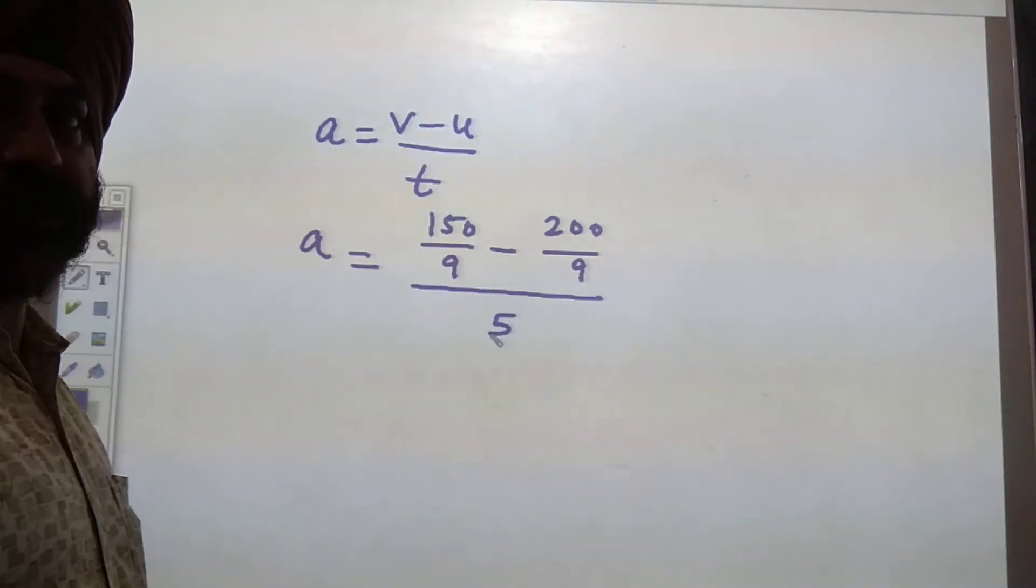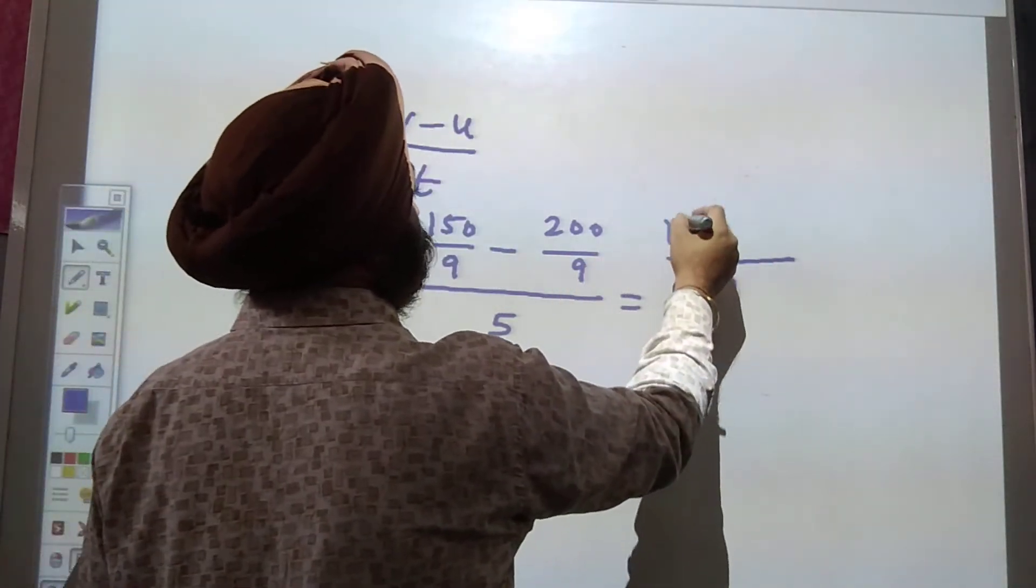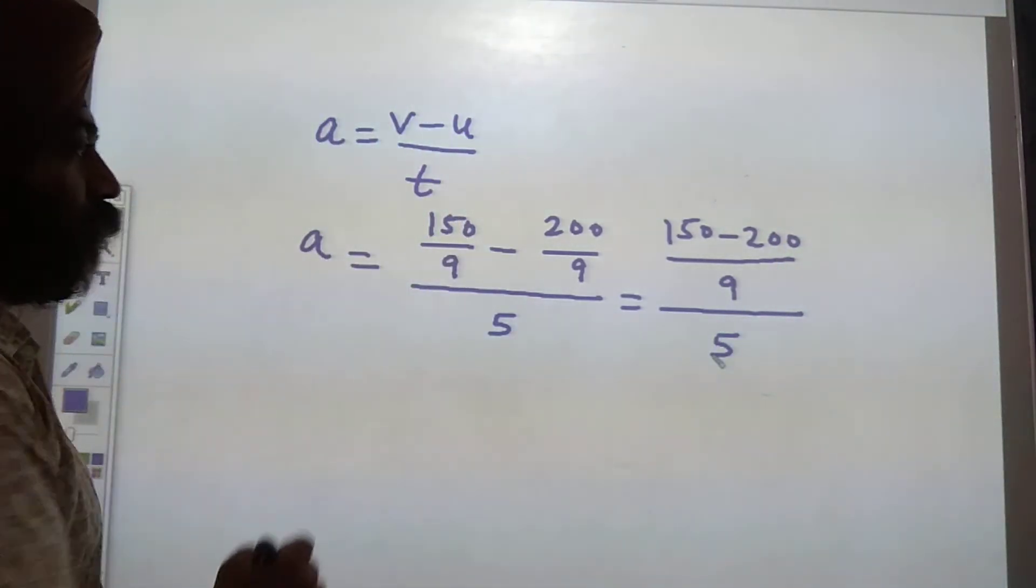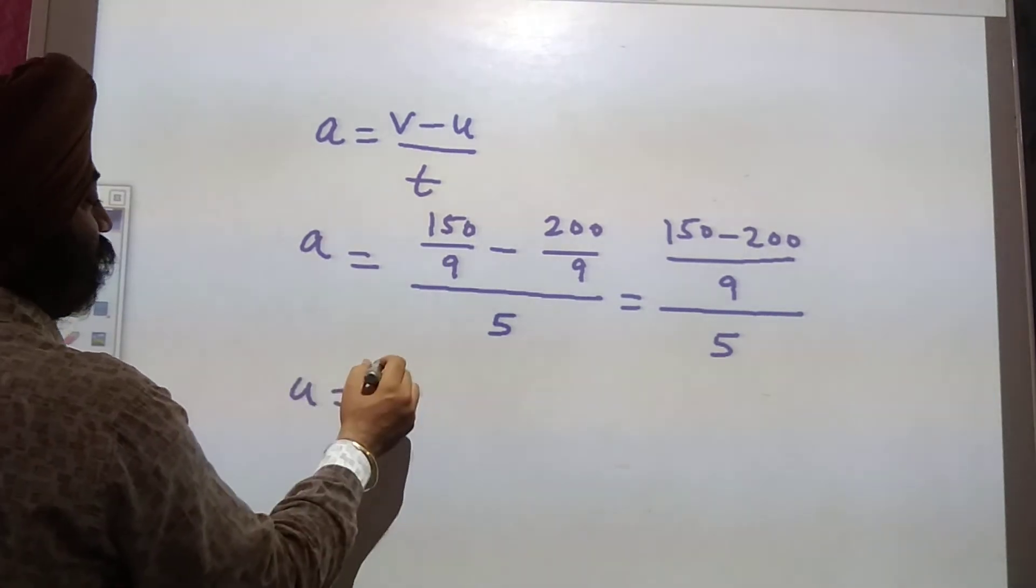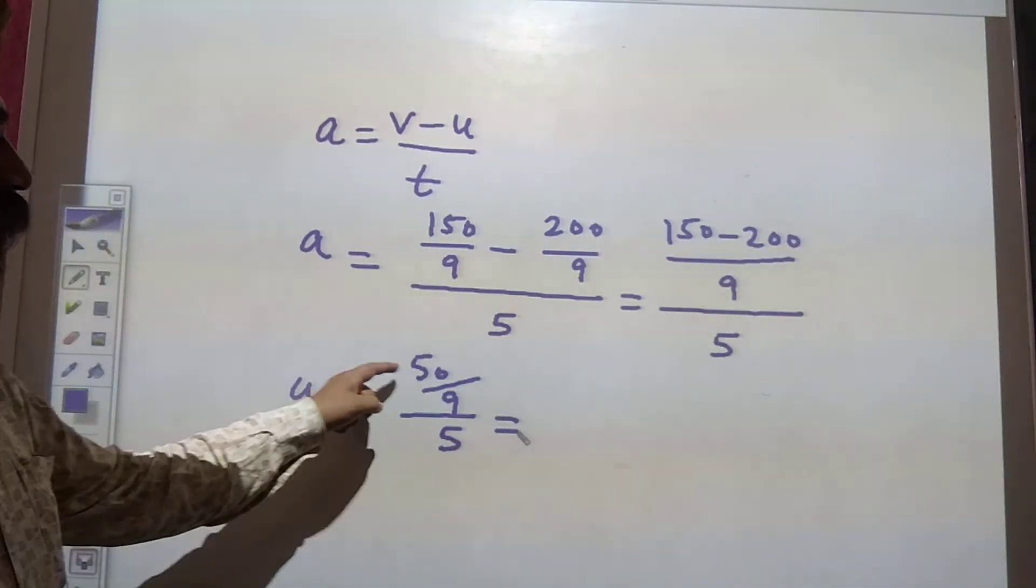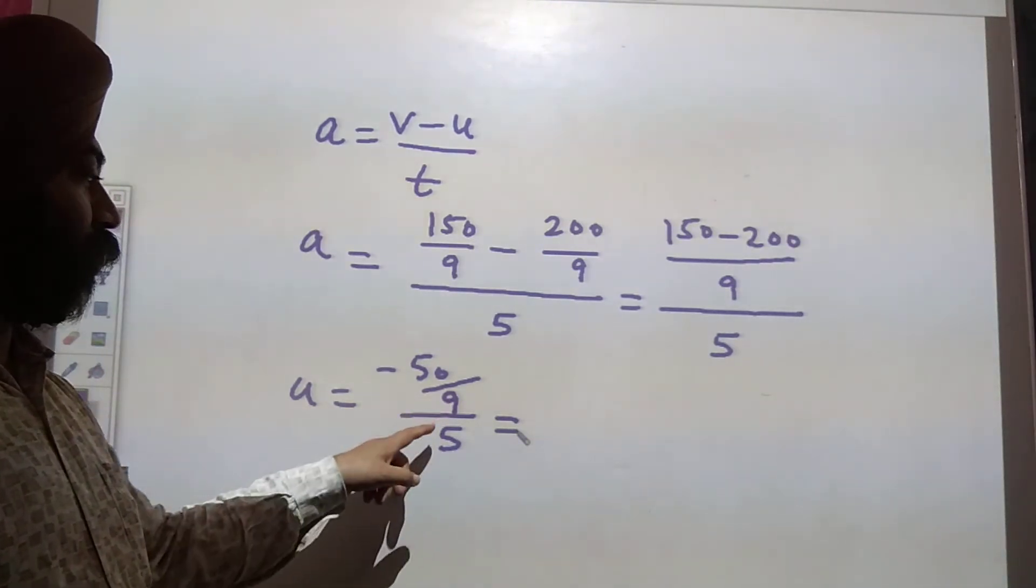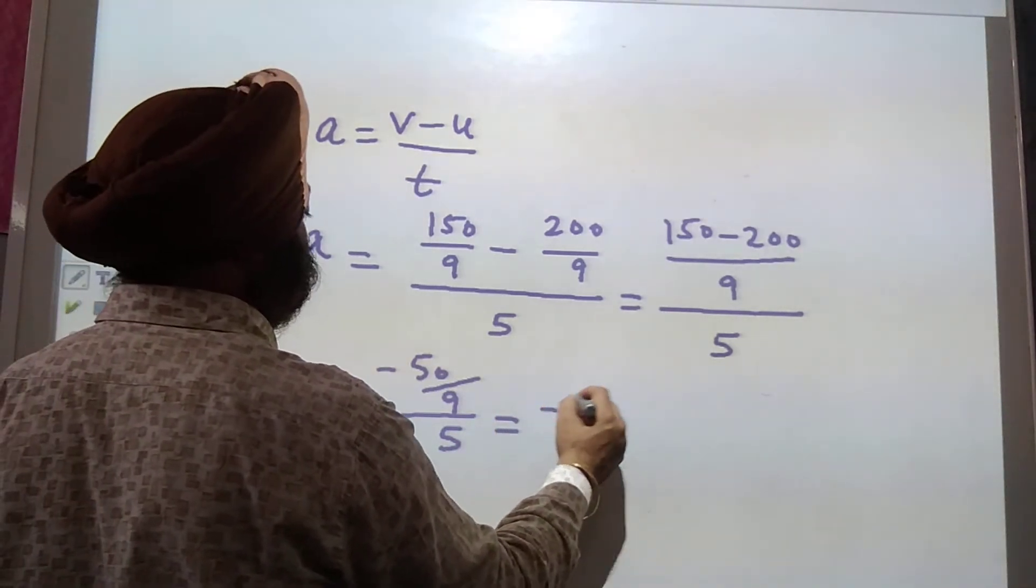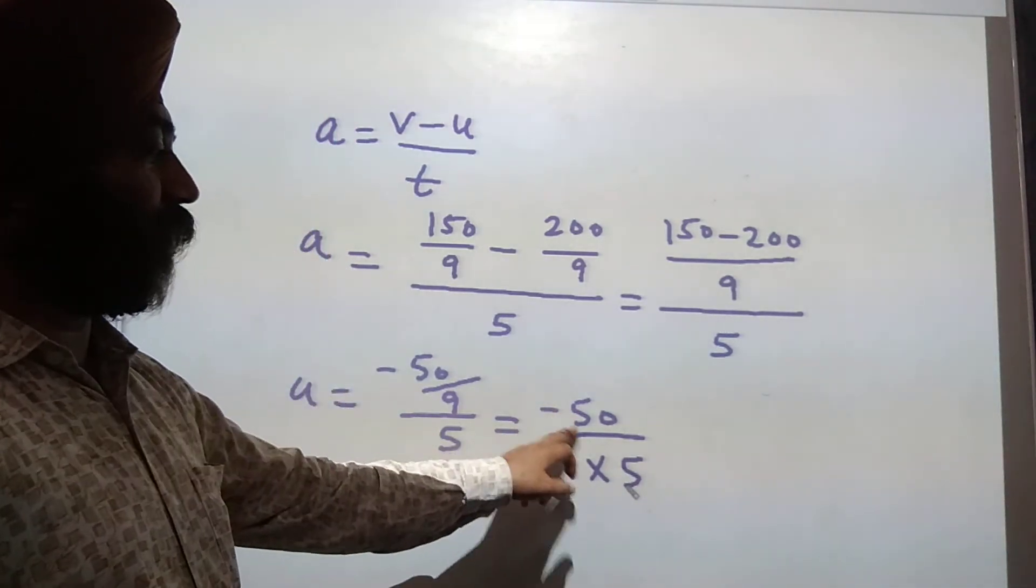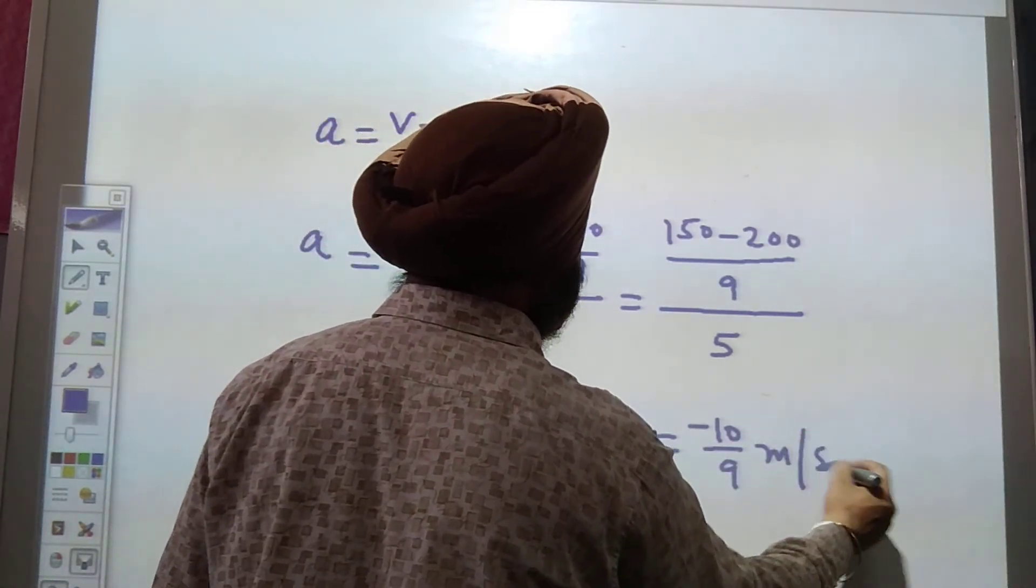Now solve the numerator part. 150 minus 200 upon 5. Now 150 minus 200 will be minus 50 upon 9 upon 5. Now minus 50 upon 9 is a fraction and 5 is in the denominator place, so we are going to write this with multiplication. So minus 50 upon 9 multiplied by 1 upon 5. Now we can cancel 50 with 5, so we will get minus 10 upon 9 meter per second square.